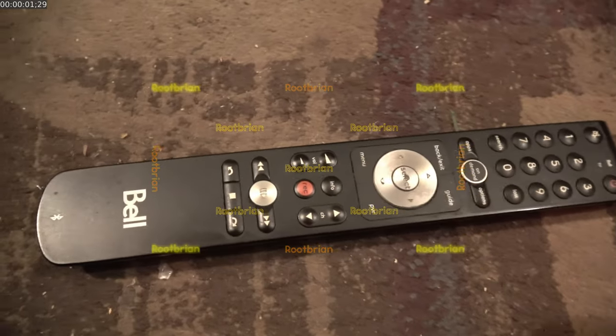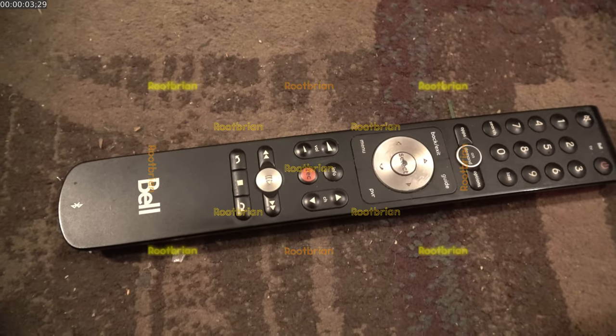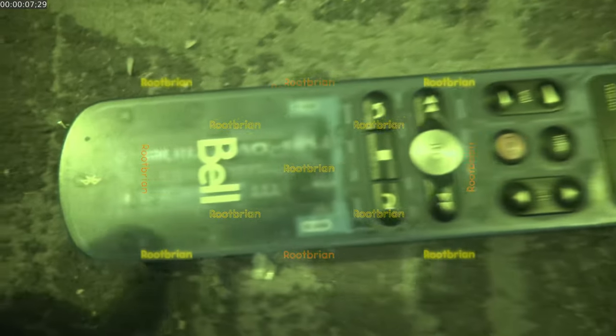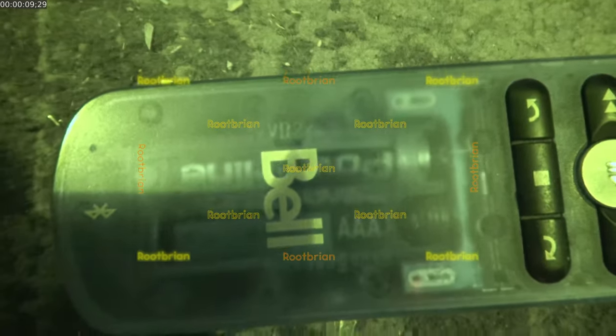Here's the Bell remote. When I turn night shot on, it takes the infrared filter out. Now you can see the batteries inside.